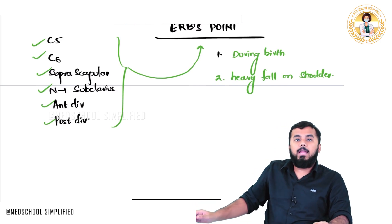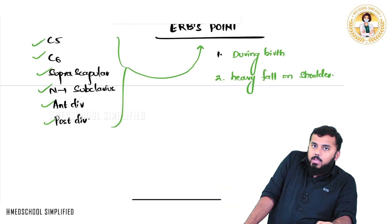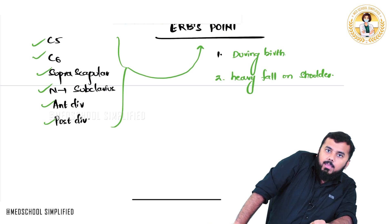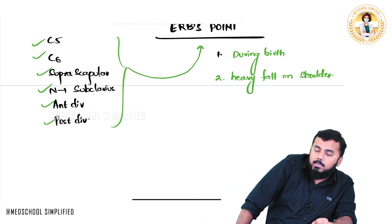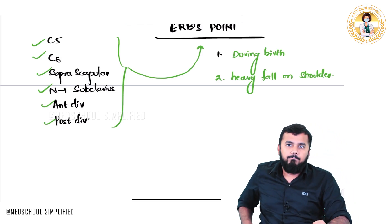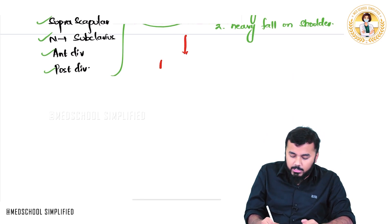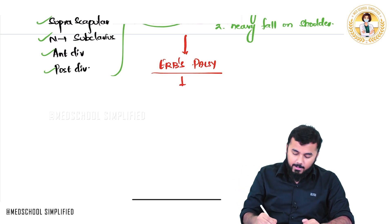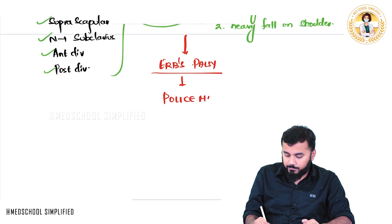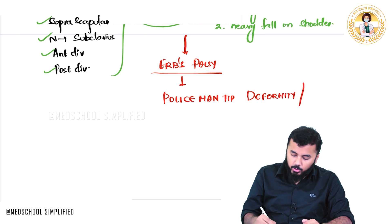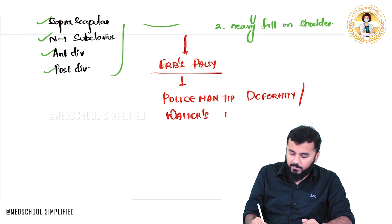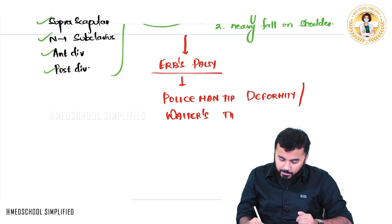In Erb's palsy, the patient's hand is completely adducted to the body and medially rotated. This type of hand is called the policeman tip deformity or waiter's tip deformity — the way waiters ask for a tip. So Erb's point damage leads to Erb's palsy, resulting in policeman tip or waiter's tip deformity.